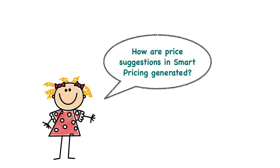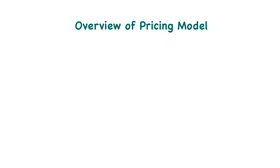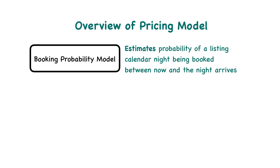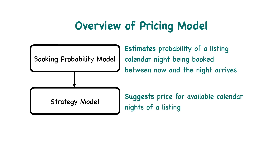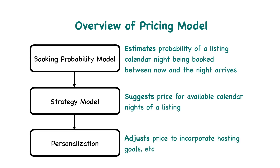How are price suggestions in smart pricing generated? They are generated by our pricing model. Our pricing model has three components. First, we have a binary classification model for predicting the booking probability of each listing night. Second, we have a regression model for predicting the optimal price, in which a customized loss function is used to guide the learning. Finally, we apply additional logic on top of the output to generate the final price suggestions.